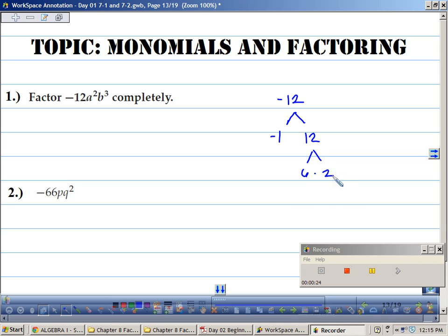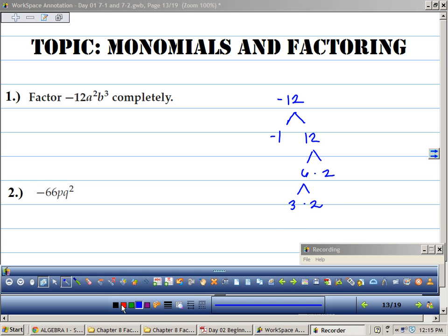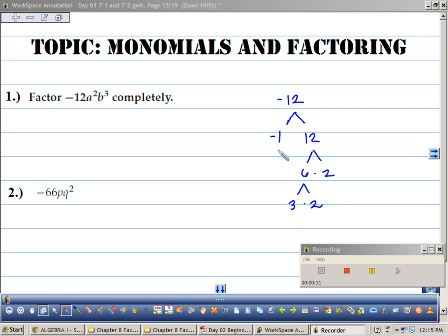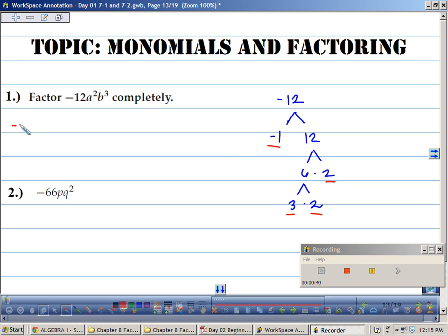6 and 2. And two more? 3 and 2. So negative 1, 3, 2, and 2 all make up negative 12. I'm going to write those out.